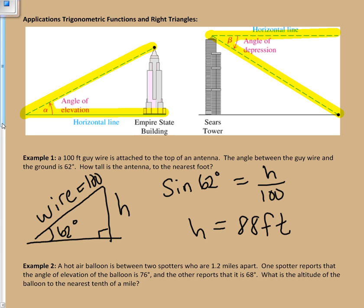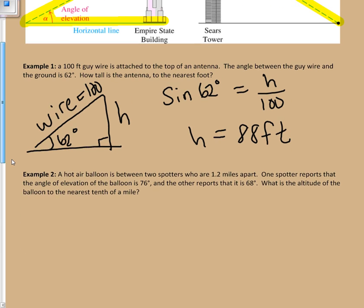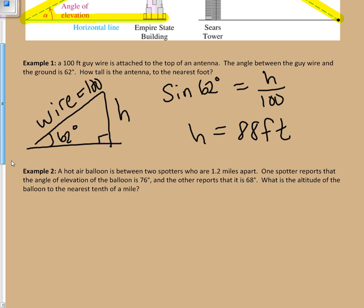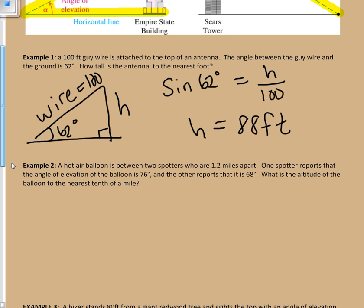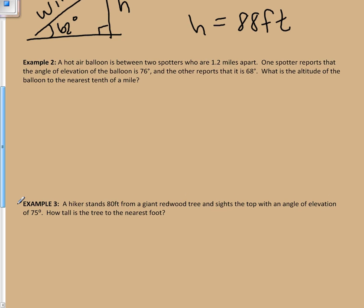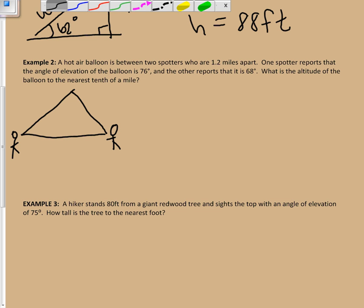The next one we're going to be looking at is a hot air balloon. It's between two spotters who are 1.2 miles apart. One spotter reports that their angle of elevation to the balloon is 76, and the other one is 68. We would like to know the altitude of the balloon to the nearest tenth of a mile. So I'm going to draw a picture here. Here's the first person, not drawn to scale. Here's my second person, not drawn to scale. We know that this entire distance here, from person to person is 1.2 miles.